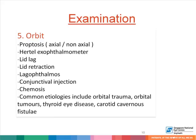Subsequent to this, one must examine the orbit, because orbital problems can also result in double vision when there is no neurological issue. Assess for proptosis using a Hertel's exophthalmometer, and look to see if it is axial or non-axial. Lid lag, lid retraction, lagophthalmos, conjunctival injection, and chemosis are all clues to an orbital problem which may be congestive or inflammatory. Most common etiologies include orbital trauma, orbital tumors, thyroid eye disease, carotid-cavernous fistula, etc.